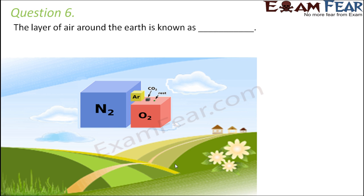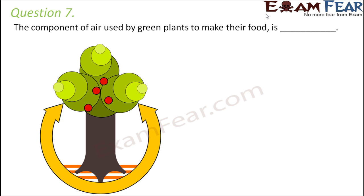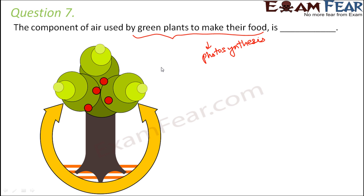The layer of air around the earth is known as the atmosphere. Question number seven: the component of air used by green plants to make their food. Green plants making their food is a process known as photosynthesis. The component taken up by the plants for photosynthesis is carbon dioxide.